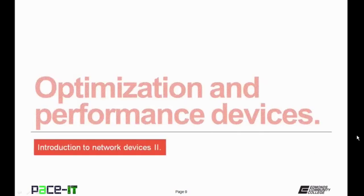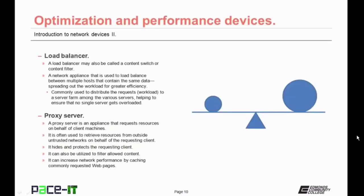Now let's talk about optimization and performance devices. We will begin with the load balancer. A load balancer may also be called a content switch or content filter. It's a network appliance used to load balance between multiple hosts that contain the same data, spreading out the workload for greater efficiency. They're commonly used to distribute requests or workload to a server farm among various servers, helping to ensure that no single server gets overloaded with work requests.